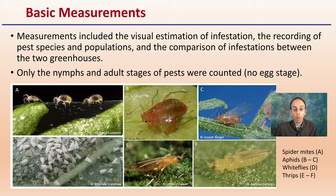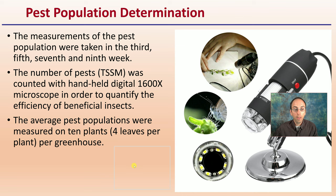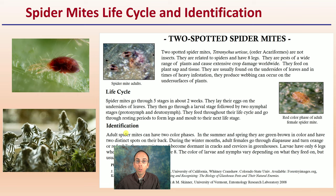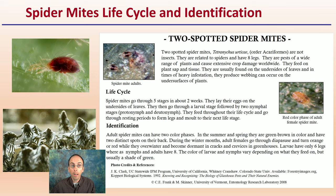Pest populations were measured in the third, fifth, seventh, and ninth week. Spider mites were counted using a handheld digital 1600x microscope in order to quantify the efficiency of the beneficial insects. Average pest populations were measured in 10 plants, four leaves per plant per greenhouse.